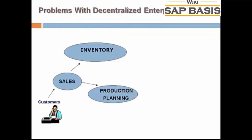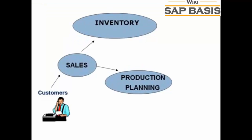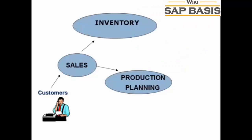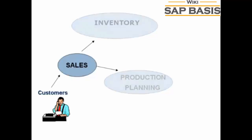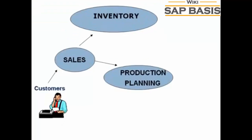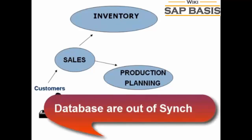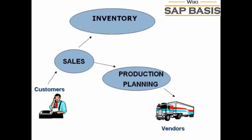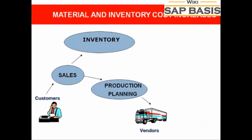Now suppose the product is out of stock and the sales team approaches the production planning team to manufacture the product for future use. The production planning team checks the availability of the raw materials required. Raw material information is separately stored by production planning as well as the inventory department, so data maintenance cost goes up. A particular raw material required is actually available in inventory, but according to the production planning team's database it is out of stock, so they go ahead and buy it — thus material and inventory costs go up.